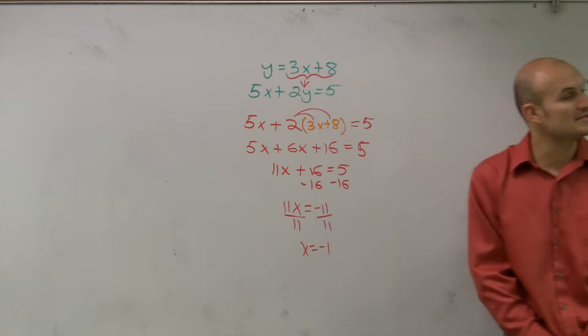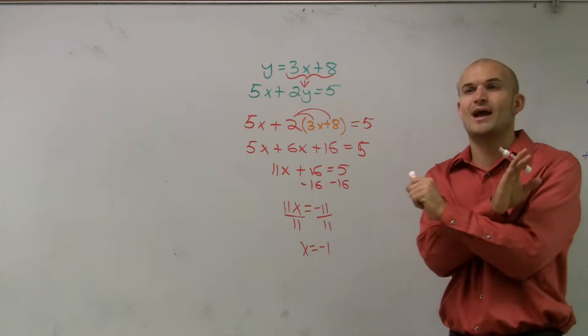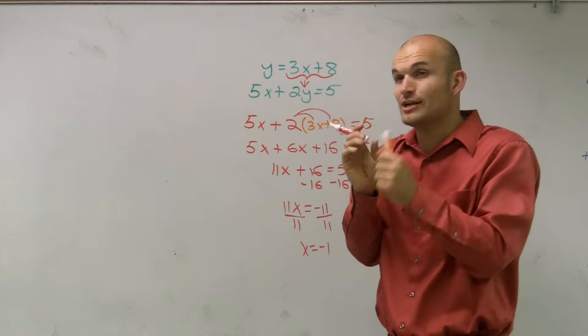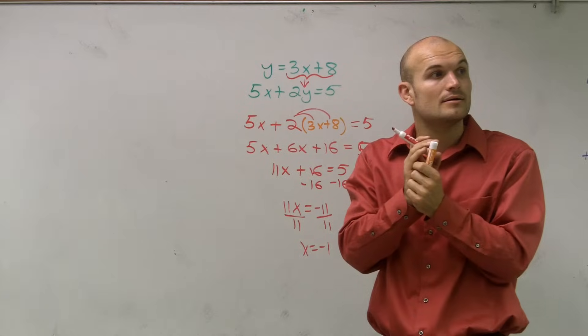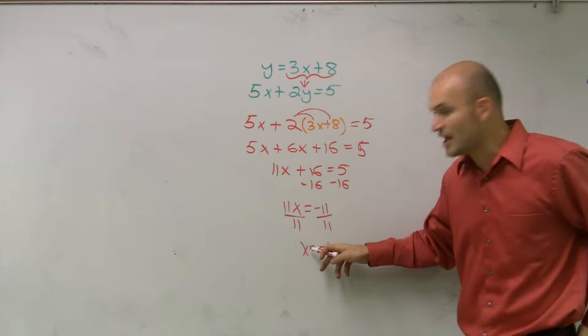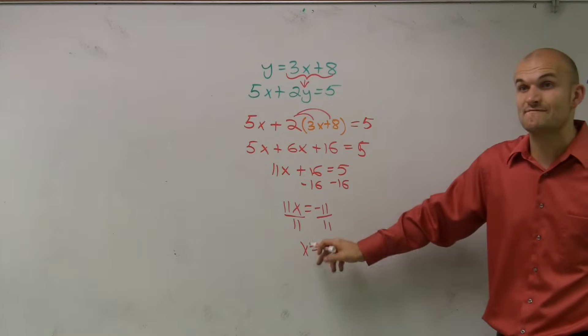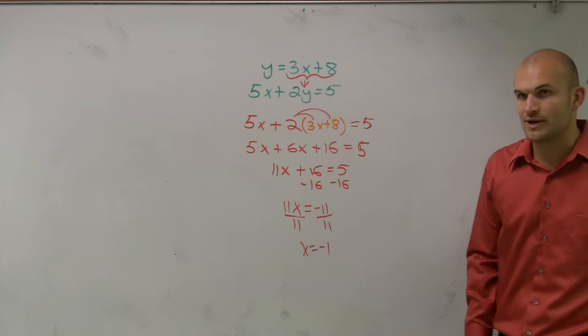So since my x now equals negative 1, remember guys, when we were talking about the graphing, there was an x and a y coordinate, right? Their intersection point intersected at a given point, x comma y. So if I know the value of my x, now what I need to do is substitute that value back into one of my equations.